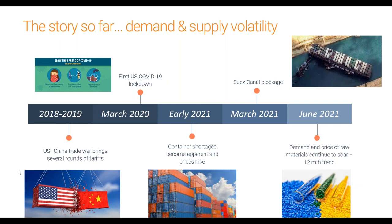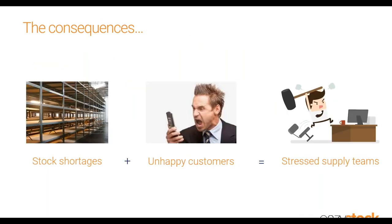Finally, additional tariffs, high demand, container shortages, and a disrupted supply chain have culminated in high prices for raw materials. Raw material prices are expected to average 10% higher this year compared to 2020 before stabilizing in 2022, according to the World Bank's Commodity Markets Outlook. Stock shortages and high prices coupled with unhappy customers have resulted in stressed-out supply and inventory procurement teams. These challenges are here to stay for at least another six months, very likely even longer. Here are some tips on how teams can best manage their inventory availability.